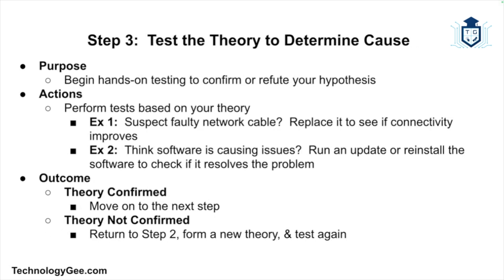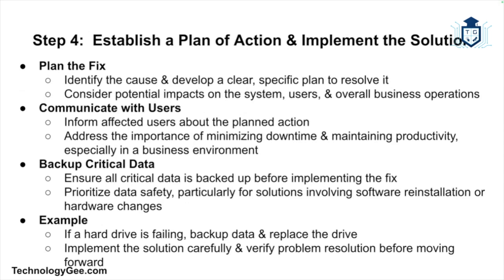The next step is to test the theory to determine the cause. This is where hands-on testing begins to confirm or refute your hypothesis. For example, if you suspect a faulty network cable is causing connectivity issues, try replacing it to see if the problem is resolved. If you believe a software issue is to blame, try running an update or reinstalling the application. If the theory is confirmed, move on. If not, go back to step two and establish a new theory.